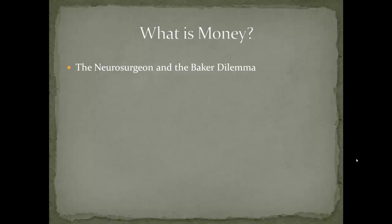Here's the problem: the vast majority of bakers do not have brain cancer. So even though I as a neurosurgeon have a skill that is incredibly valuable, rare, and takes decades to develop, I'm probably going to starve to death because I have no utility to society outside of this very small subset. In a barter-based society, people with very specialized skills don't tend to do very well, and this is a problem because the key to advancing and growing quickly is specialization.